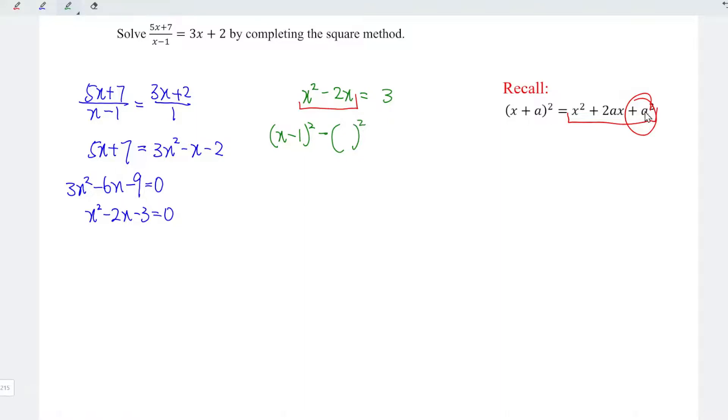However, this is always squared, which means that the plus minus sign is not important. We can simply ignore. And this is equal to the right-hand side, which is 3. Again, constant moves to the right. So we should have x minus 1 squared is equal to 3 plus 1 squared, which is 1. And this is equal to 4.